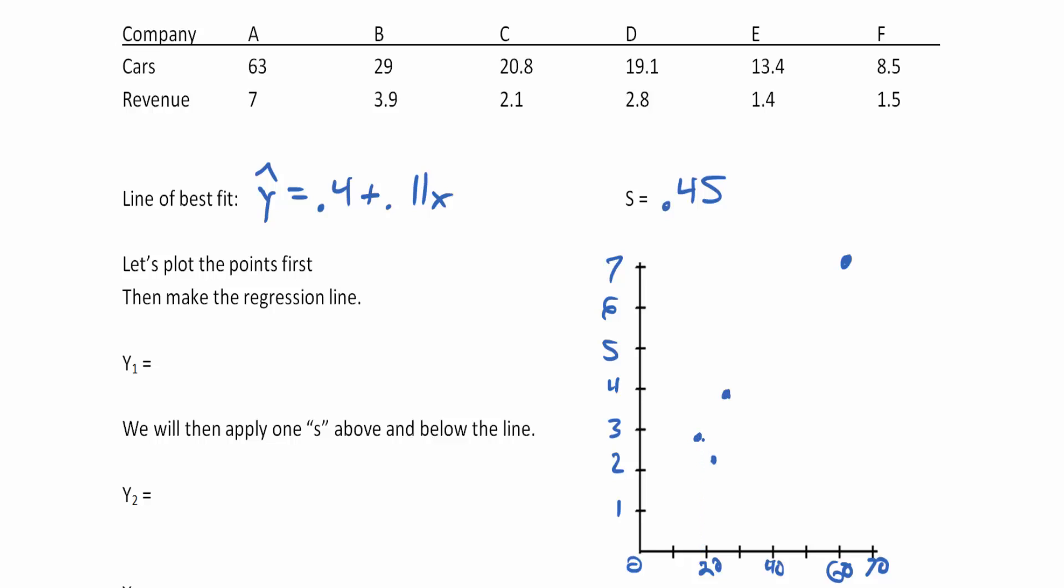19.1, a little before twenty, was a little below three at 2.8. 13.4, not quite halfway, and 1.4 is also not quite halfway between one and two. 8.5, before the ten, is exactly 1.5.